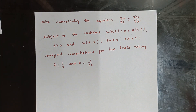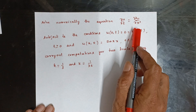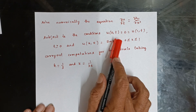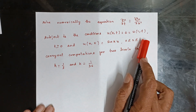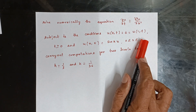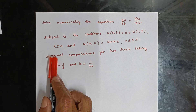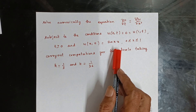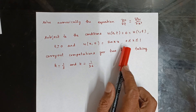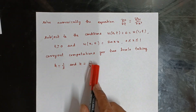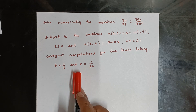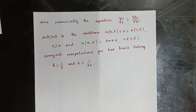Solving numerically the equation ∂u/∂t = ∂²u/∂x², subject to the conditions u(0,t) = 0 = u(1,t) for t ≥ 0, and u(x,0) = sin(πx) for x between 0 and 1. Carry out computations for two levels taking h = 1/3 and k = 1/36.